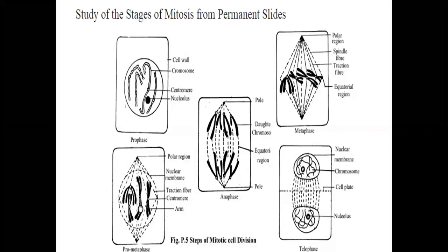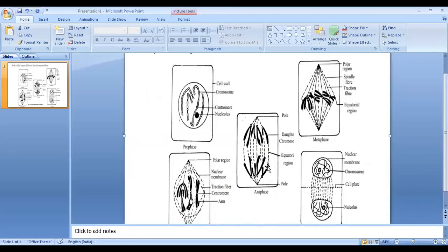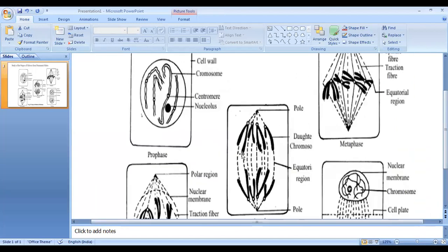After the completion of metaphase, the cell goes into the anaphase stage. In anaphase, chromosomes start to separate. One major enzyme called separase becomes active; the separase enzyme is responsible for the breakage of connections between two sister chromatids. The sister chromatids are now separated from each other and start to move towards their respective poles. If the mother cell has four chromosomes, then four sister chromatids respectively move towards their poles.